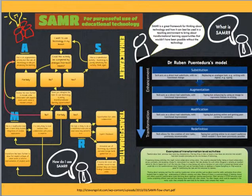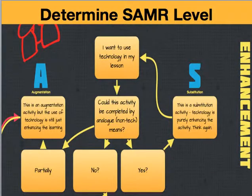Here is an excellent flowchart to help educators determine which tasks qualify for each SAMR level. First, think about whether your technology activity can be completed by analog or non-tech means. If yes, this is a substitution activity. For example, looking up a city capital on an online atlas versus a paper atlas.